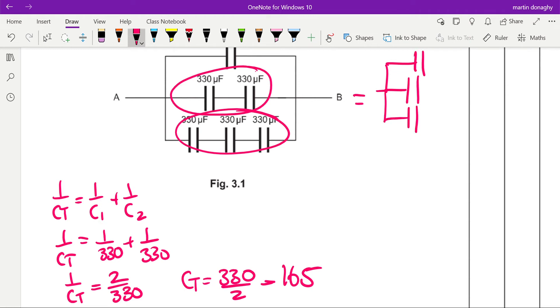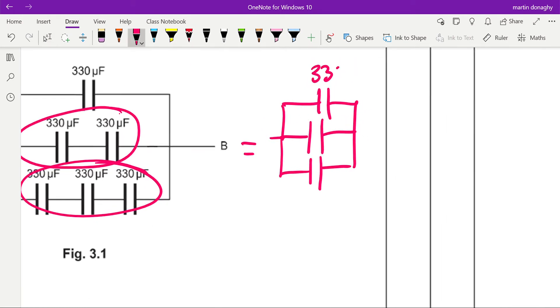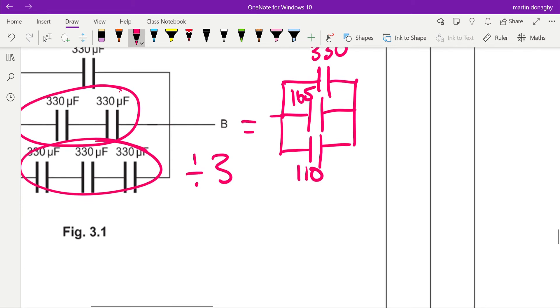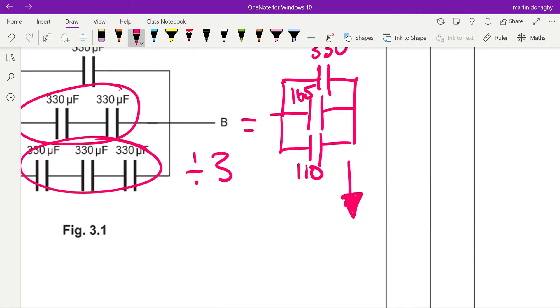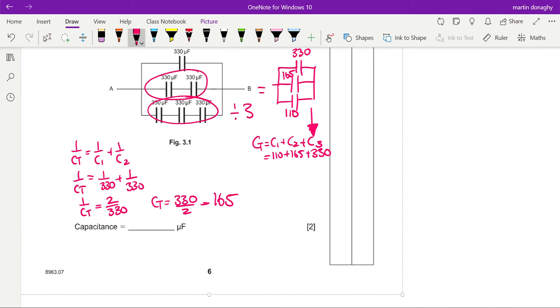So we're gonna put each of these together. This one will be 330 microfarads, this one here will be 165, and we're going to divide that by three because there's three of them in series. That bottom capacitor, the total capacitance of it would be 110. Now that then is three capacitors in parallel, and if capacitors are in parallel we just add them together. So it's going to be 110 plus 165 plus 330.